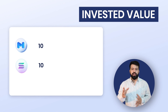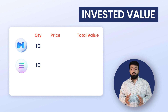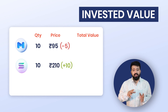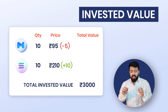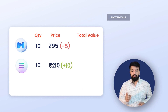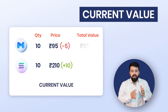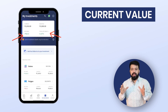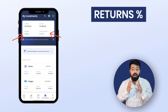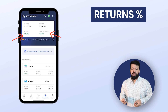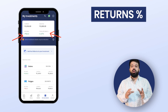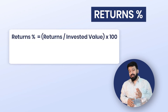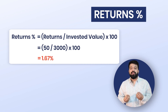Now let's say after a certain time, the price of the coins change. For example, Matic price decreased to 95 and Solana ka case mein the price increased to 210 rupees. So your invested value will still remain the same — 3000 INR rupees pe aap jo invest kiya, woh toh badla nahi hai. But your current value will now be 95 x 10 plus 210 x 10, which equals to 3050. It indicates both returns and return percentage with respect to your current and invested amount. In this case, your returns will be 50 INR as your current value is more than the invested value by 50 INR. Similarly, total return percentage will be calculated by return divided by invested value into 100, which will be 1.6%.